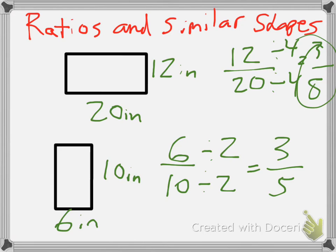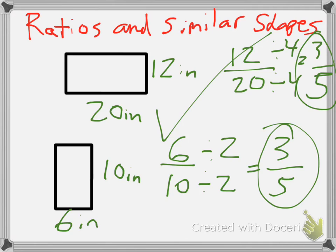When I see that this final ratio is the same, 3/5 and 3/5, I know right away that those shapes are similar to each other. So this can be a quick way for us to just do a quick check and see if shapes are similar.